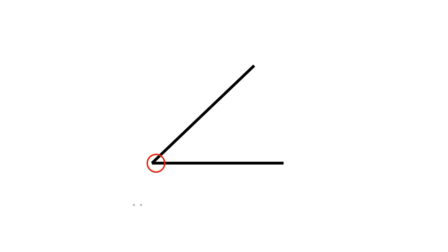This intersecting point is called vertex and these two lines are called arm.